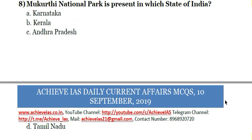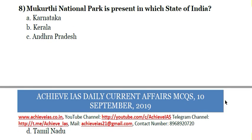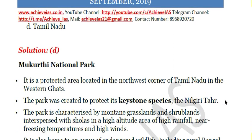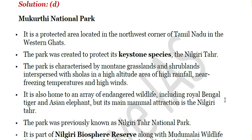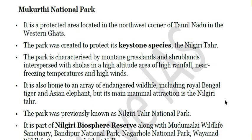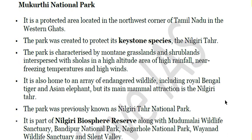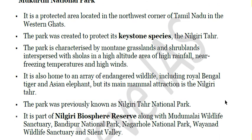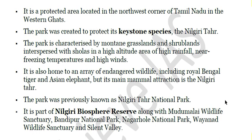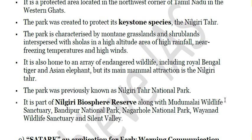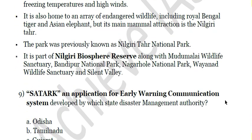The eighth question: Mukurti National Park is present in which state? The answer is D — Tamil Nadu. It is a protected area located in the northwest corner of Tamil Nadu in the Western Ghats. The park was created to protect its keystone species, the Nilgiri Tahr. It is characterized by mountain grasslands, shrublands, and sholas at high altitude with high rainfall, near-freezing temperatures, and high winds. It is part of the Nilgiri Biosphere Reserve, previously known as the Nilgiri Tahr National Park, and is home to Royal Bengal Tiger and Asian Elephant.